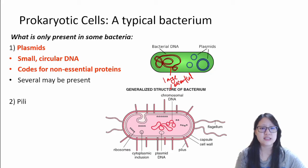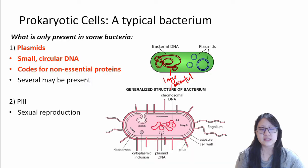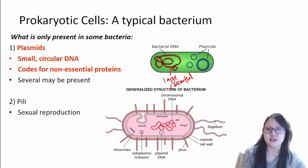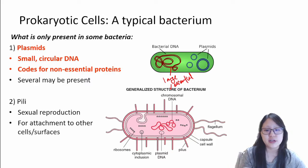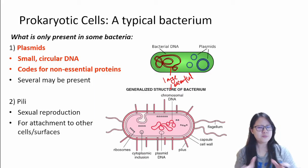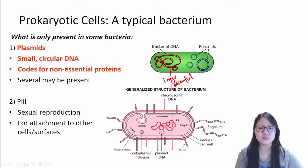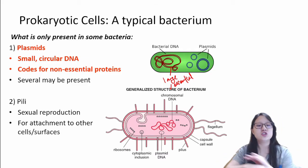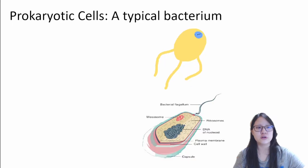Another thing that could be present in some bacteria — not all, and some bacteria only produce it sometimes — is pili. Pili is for sexual reproduction, more for attachment to other cells or surfaces, kind of like a bridge, so that they can exchange genetic material.